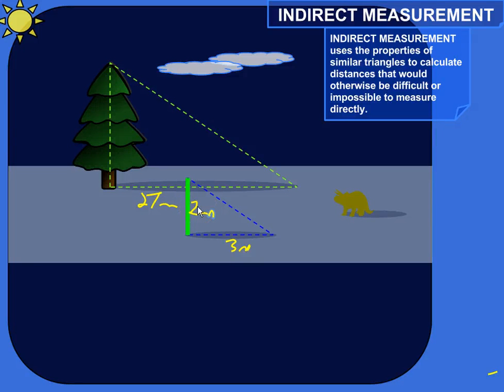So Thales was the first guy that we know about who measured something using the method of indirect measurement, which uses similar triangles. And he actually measured the heights of the Great Pyramids in Egypt, which kind of blew people away at the time. This was around the 6th century B.C.E. And it's kind of an ingenious method. And we'll follow in his footsteps and show how to do it.